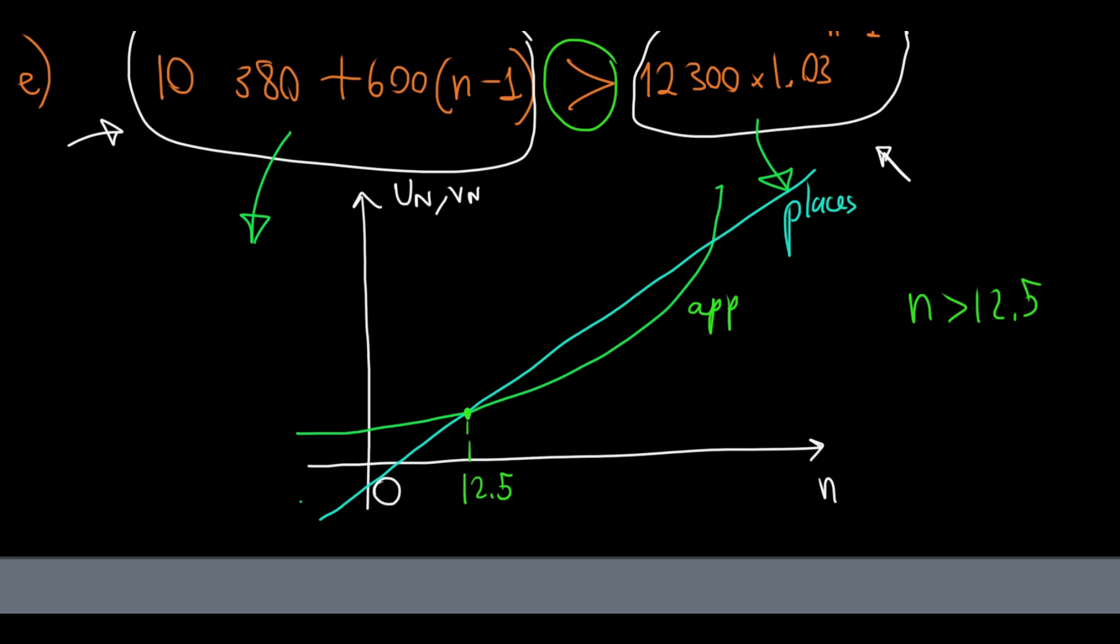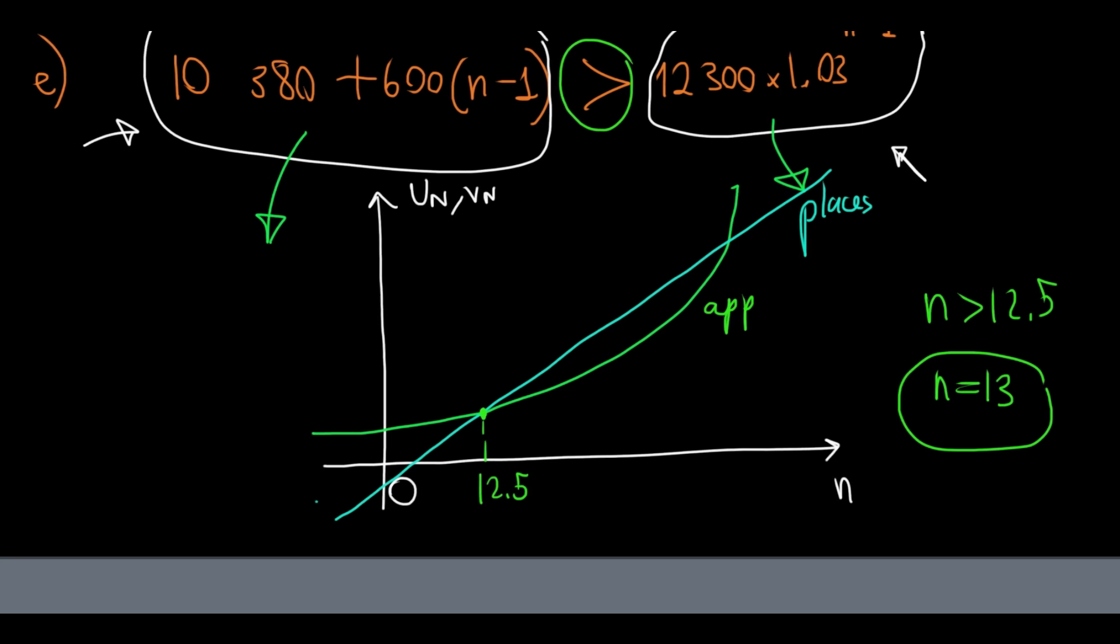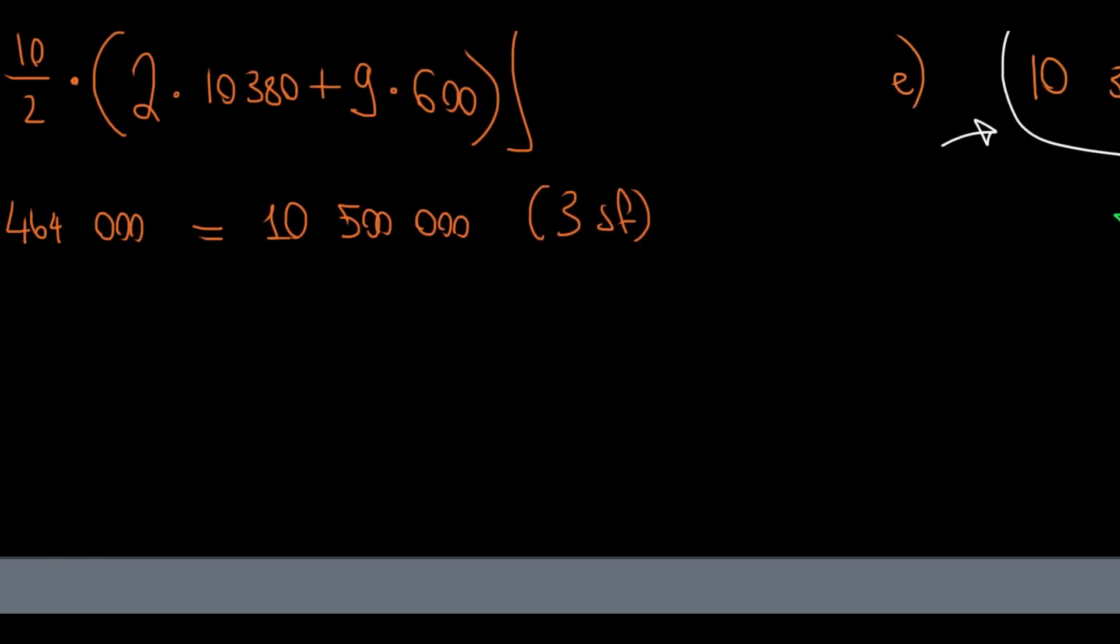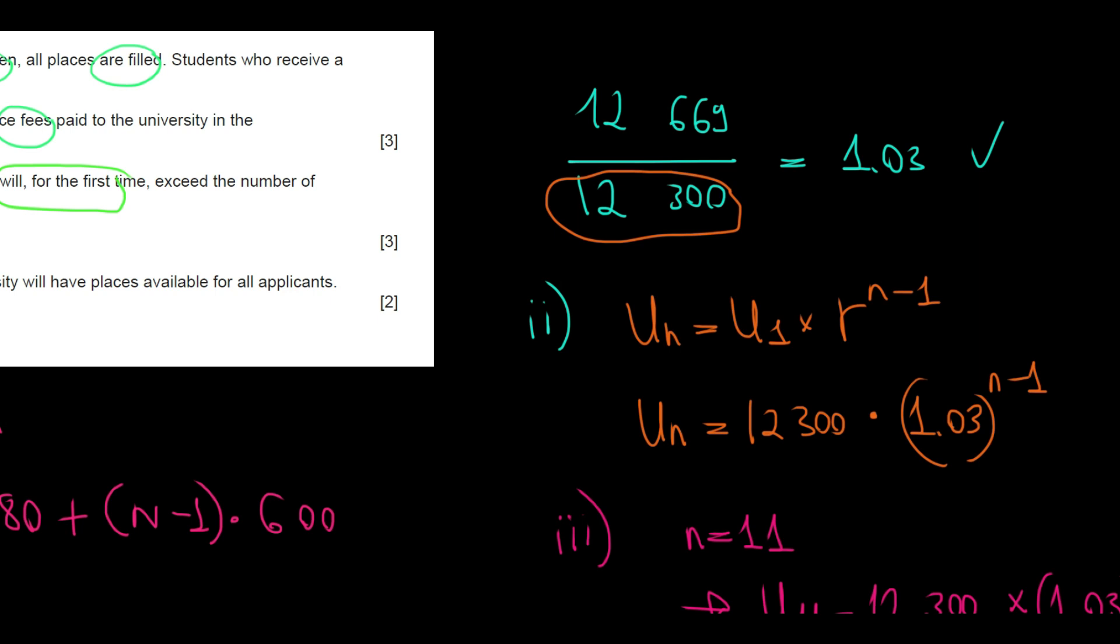But, since, so n has to be above 12.5. What's the first integer value satisfying this condition? That's going to be n equals to 13. So, after 13 years, we can say that the number of places exceed the number of applications. Hope this makes sense. Now, the last part. We go back and we discuss the last part of the question. Question F.